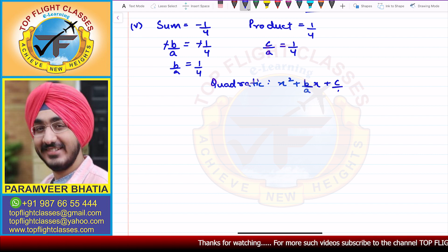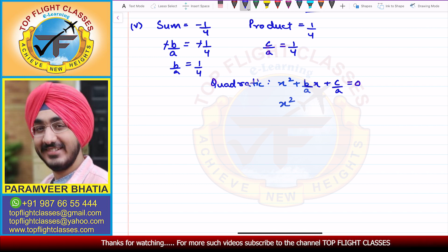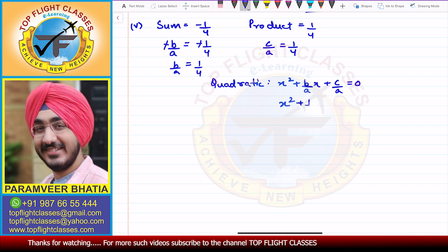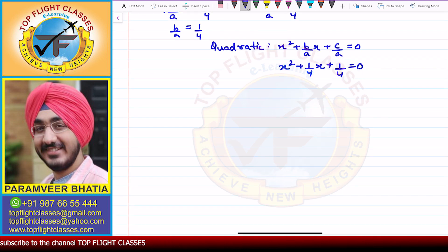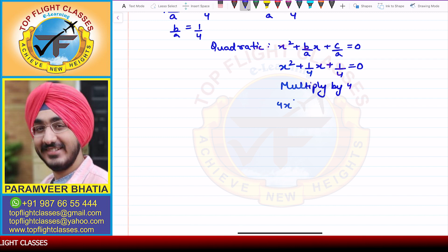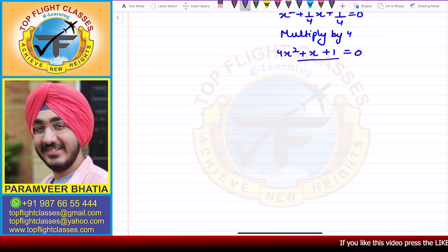For the fifth part, the sum is -1/4 and the product is 1/4. Writing the quadratic x² + (b/a)x + c/a = 0 and substituting b/a = 1/4 and c/a = 1/4, we get x² + (1/4)x + 1/4 = 0. Multiplying by 4 gives 4x² + x + 1 = 0. This is the required quadratic.